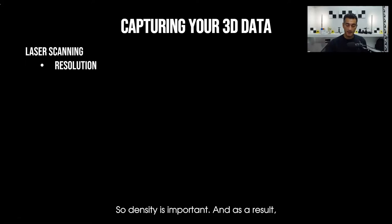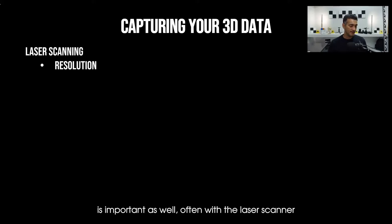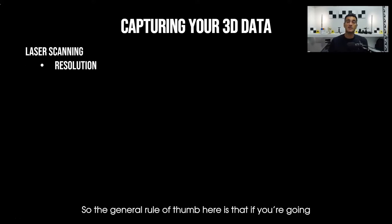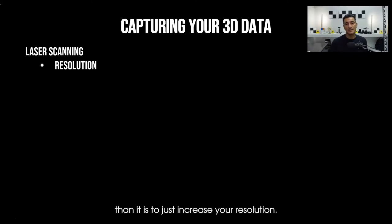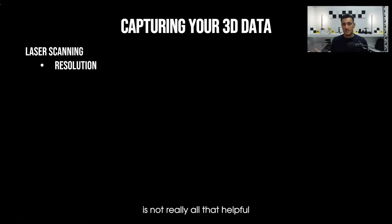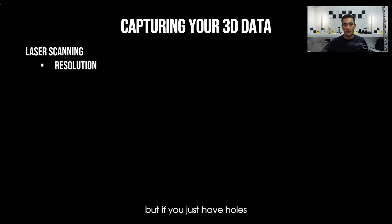Your camera positions — where you're putting the scanner — are important as well. With the laser scanner it's a line-of-sight instrument, so if you're going to be doing this for an animation it's better to have more scan positions rather than just increasing resolution. High resolution with fewer scan positions isn't really helpful because you're still going to see holes. You'll have more data where you do see it, but if you just have holes everywhere it's not going to look attractive.